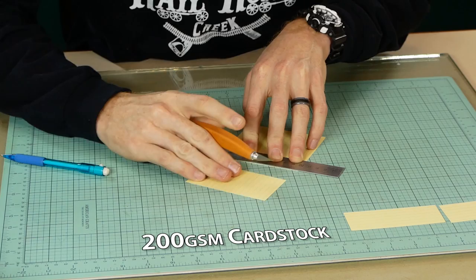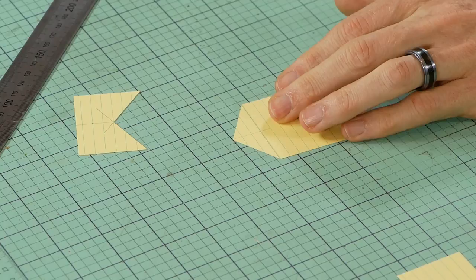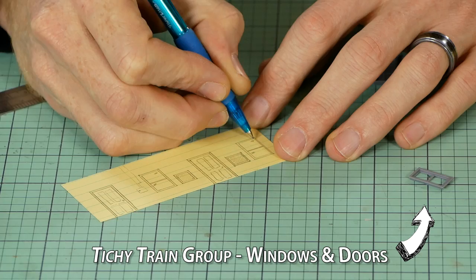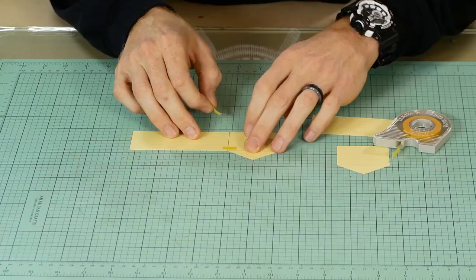I start by building a simple paper mock-up using some cardstock. It doesn't have to be fancy, it's simply used to get an idea of shape and size. I also draw the position of doors and windows and basically make sure everything fits.